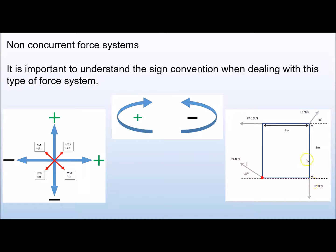For example, Force 2 going straight down is going to pull our object in a clockwise direction, so its moment will be a positive value. Whereas F1 is up and to the right, so we calculate the vertical and horizontal components: the horizontal would pull it clockwise, but the vertical would pull it anti-clockwise, giving a positive and a negative value. It's really important to keep the sign convention in mind.